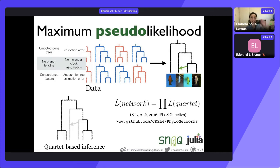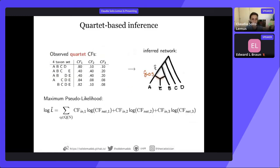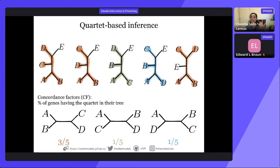One criticism of two-step approaches is that you're taking the gene trees as perfectly known, which is a valid concern. For SNAC, because we are estimating concordance factors from the gene trees, this process can account for estimation error. The concordance factors are simply numbers representing the proportion of genes having a particular quartet topology. Let's say the original dataset has five taxa: A, B, C, D, E, and we focus on four at a time. For A, B, C, D, there are three possible unrooted quartets.